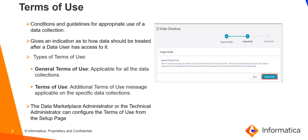Next, terms of use. Terms of use in Cloud Data Marketplace are the conditions and guidelines for appropriate use of a data collection. It gives an indication as to how data should be treated after a data user has access to it. There are two types of terms of use in Cloud Data Marketplace. The first is general terms of use, which is applicable for all data collections. The second type consists of additional messages that are applicable on only specific data collections. The data marketplace administrator or the technical administrator can configure the terms of use from the setup page.